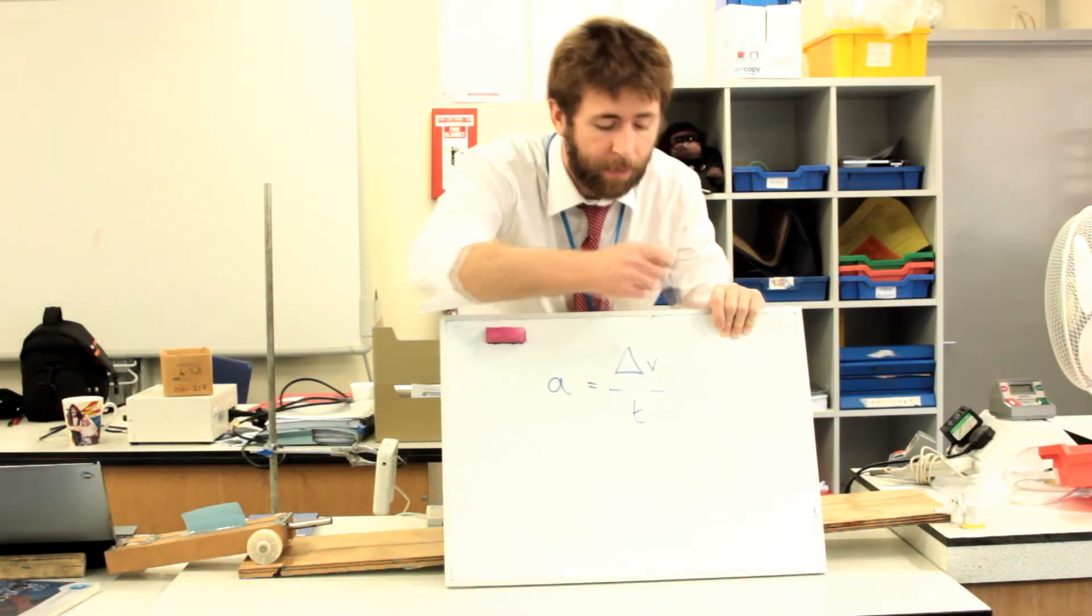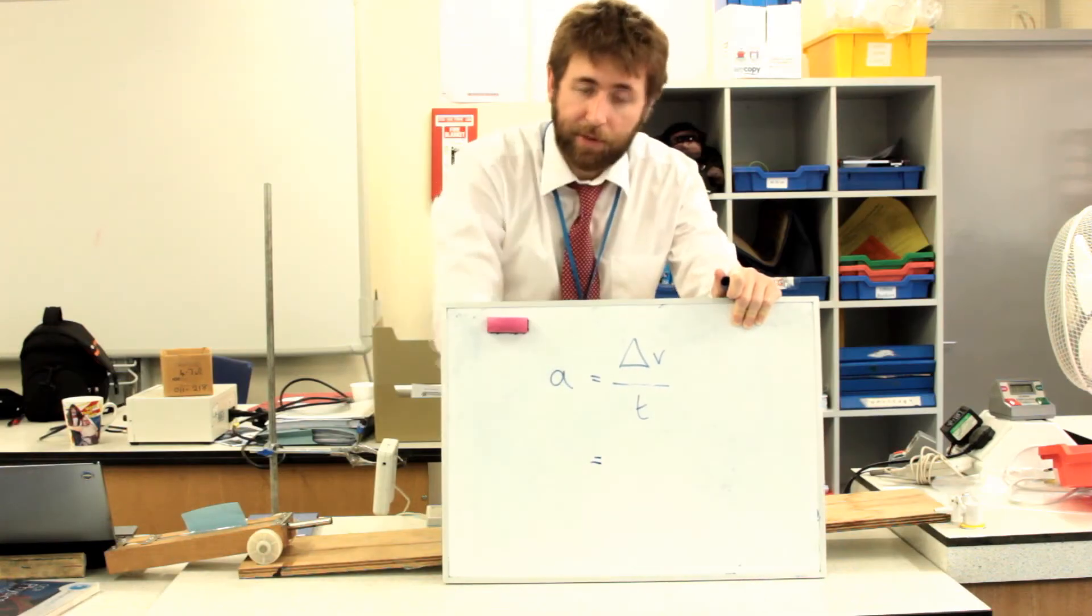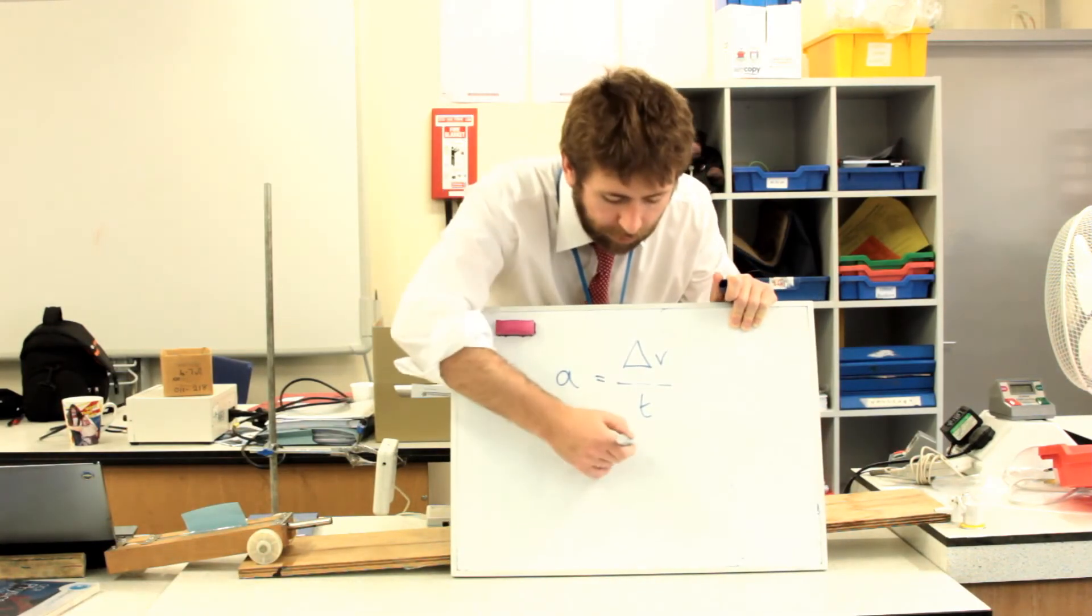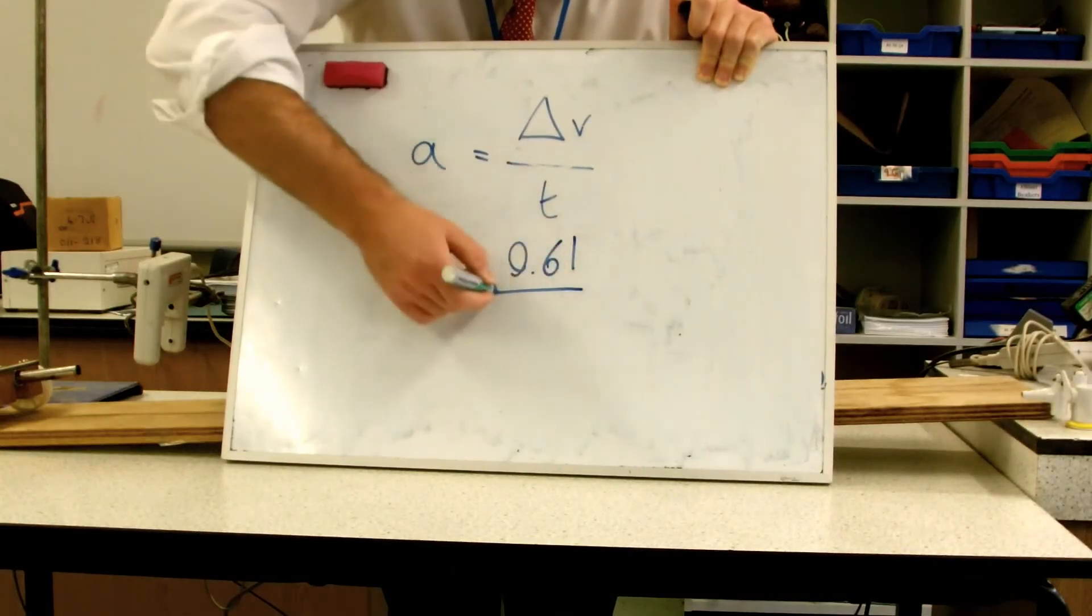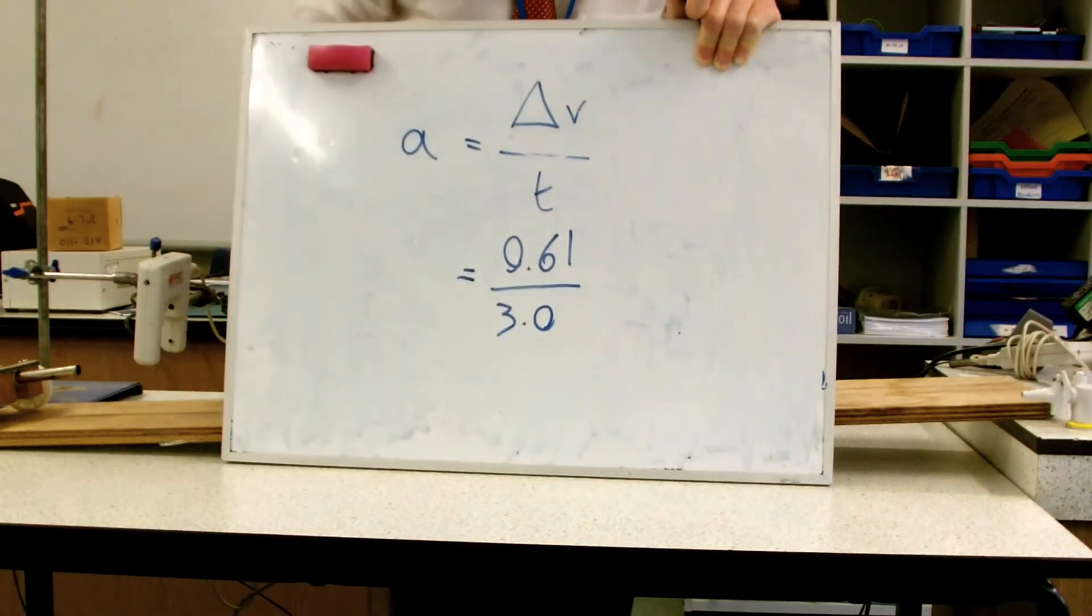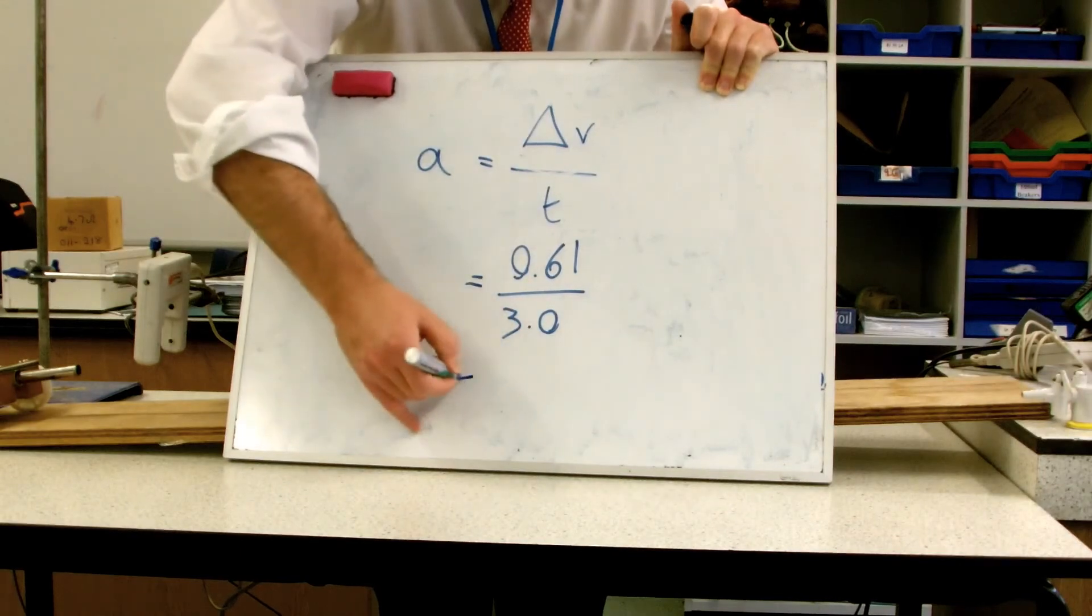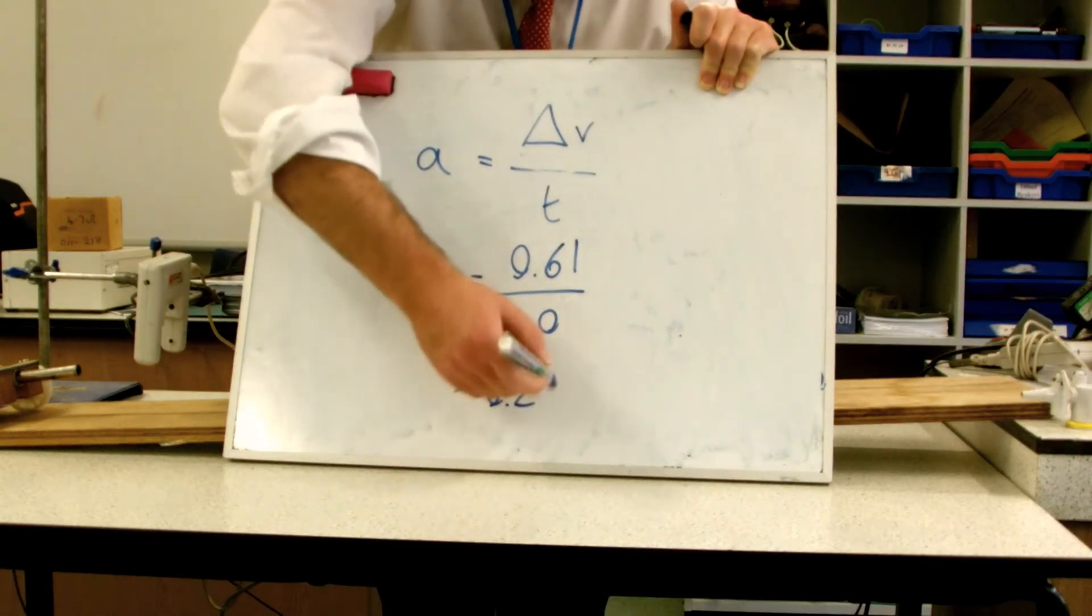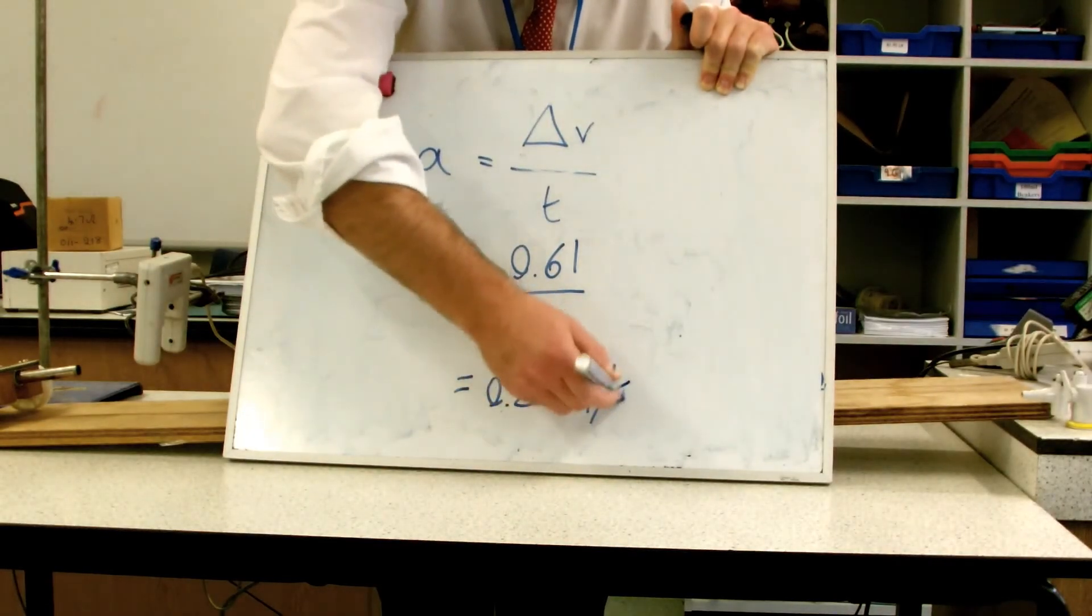In this case, I measured my change in speed was from 0 to 0.61. And the time it took was 3. So in the calculator, 0.61 divided by 3 is 0.20. The unit is meters per second squared.